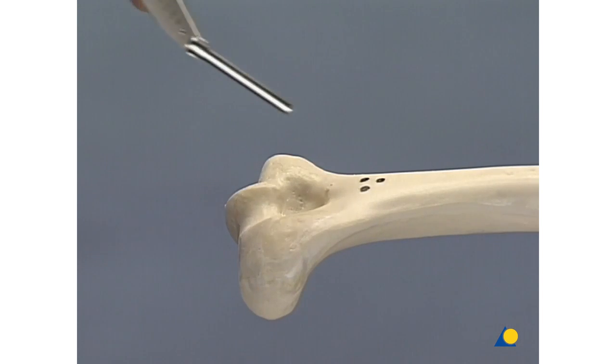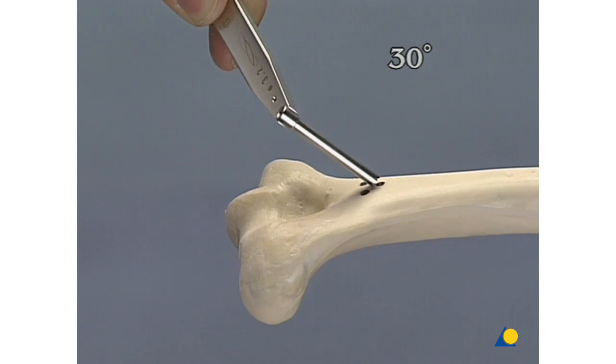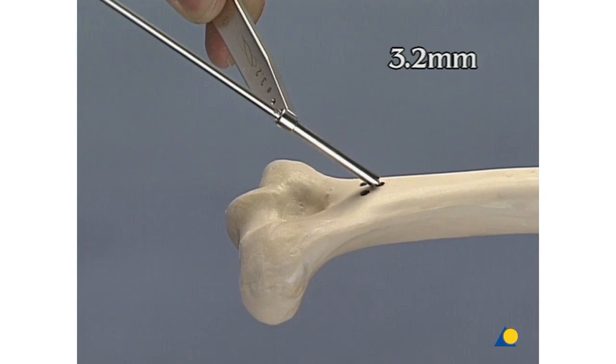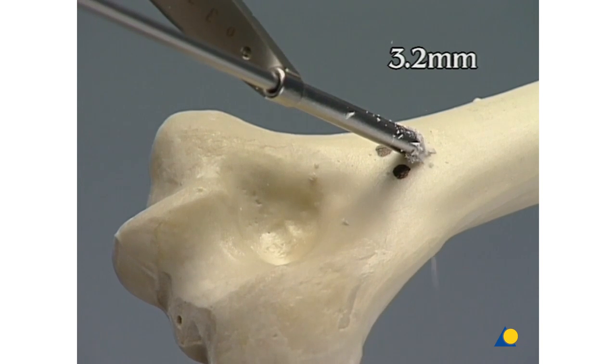The holes are drilled at an angle of 30 degrees. We drill with the 3.2 millimeter drill bit and the corresponding drill sleeve. Be sure to drill only through the near cortex.